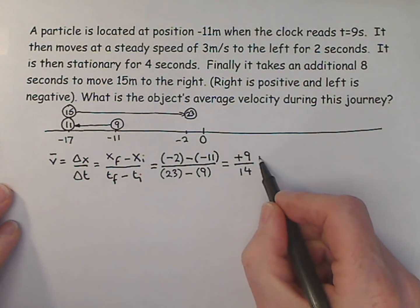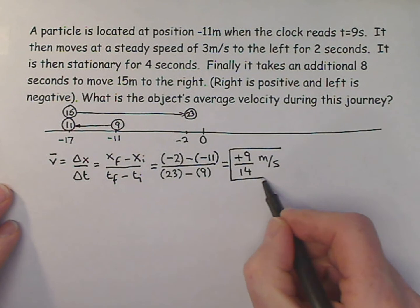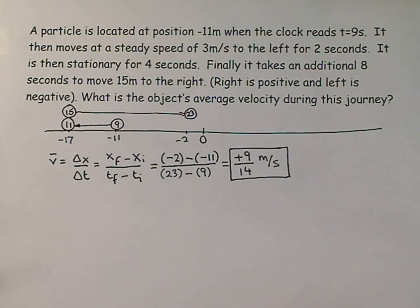So my average velocity is plus 9 over 14 meters per second. I'm going to leave that as a fraction, but it could just as easily be expressed as a decimal.